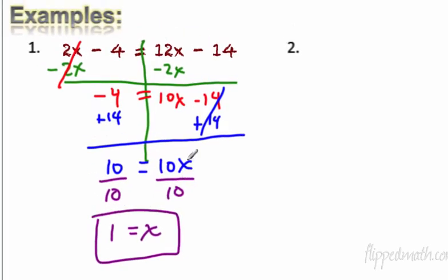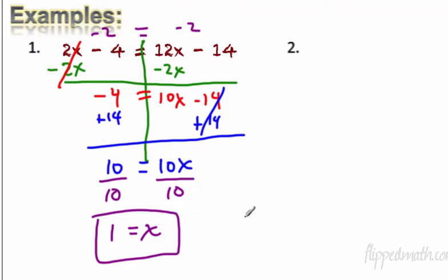Now let's check it. Go back to the original equation: 2 times 1 minus 4 is 2 minus 4, that's negative 2. On the right: 12 times 1 is 12 minus 14, that's also negative 2. I plugged 1 into both sides and it works out — negative 2 equals negative 2. That's checking my solution. If I were taking a mastery check, I would check it every single time.